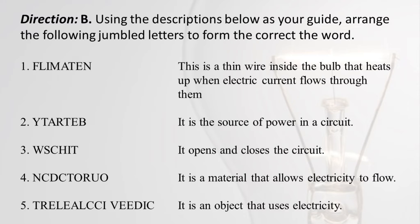Direction B: Using the descriptions below as your guide, arrange the following jumbled letters to form the correct word. (1) This is a thin wire inside the bulb that heats up when electric current flows through it. (2) It is the source of power in a circuit. (3) It opens and closes the circuit. (4) It is a material that allows electricity to flow. (5) It is an object that uses electricity.